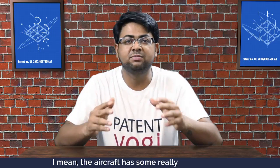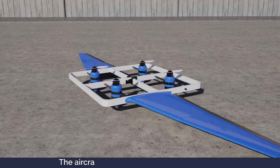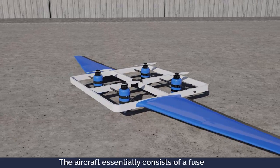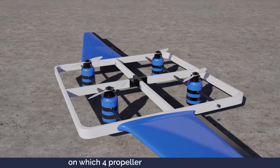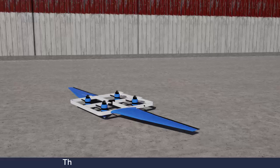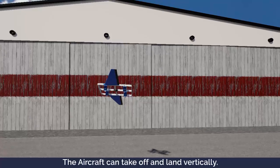The aircraft has some really cool features. The aircraft essentially consists of a fuselage on which four propeller units are mounted. The aircraft can take off and land vertically.